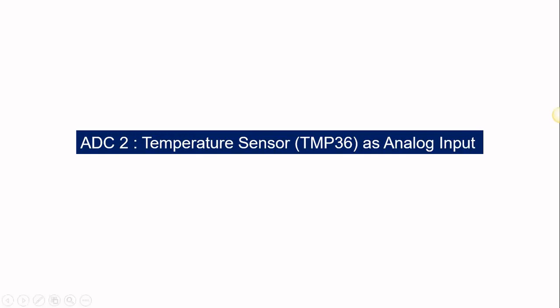Now we move to the second example of ADC. In this example, we are going to use the temperature sensor as the analog input to your Arduino Uno.